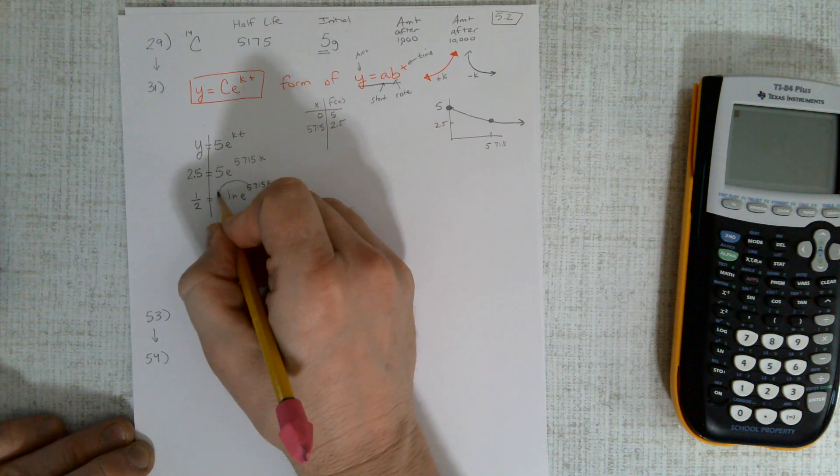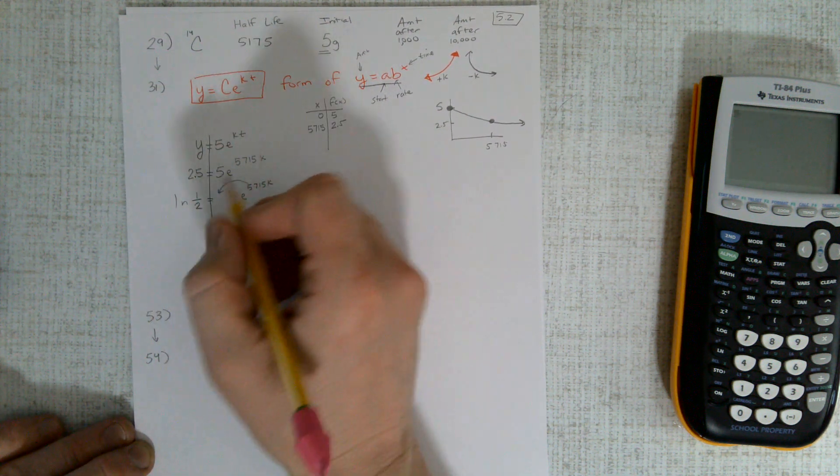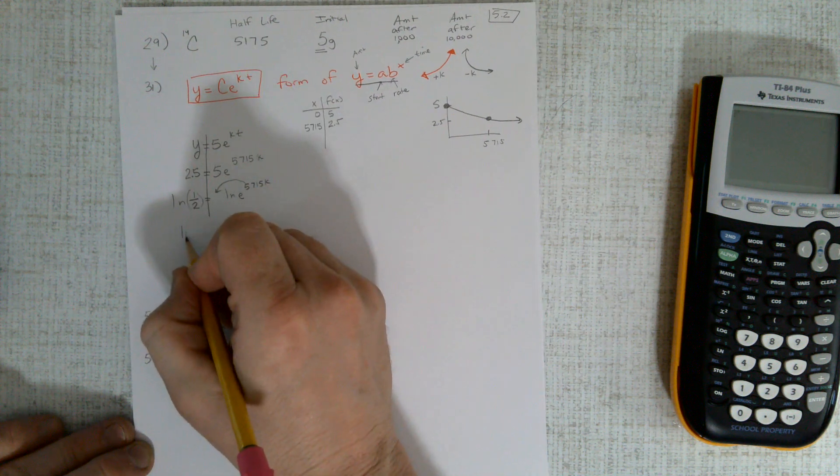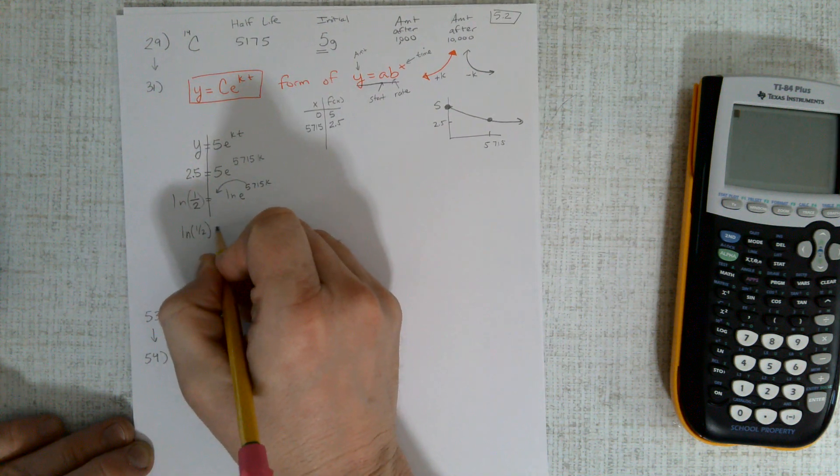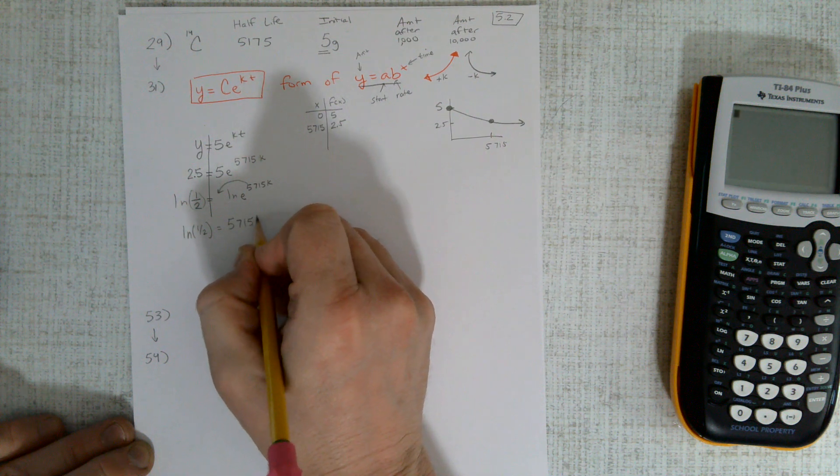But if I take the natural log, that drops down, and we take natural log of this. So on the left-hand side I have natural log of one-half.